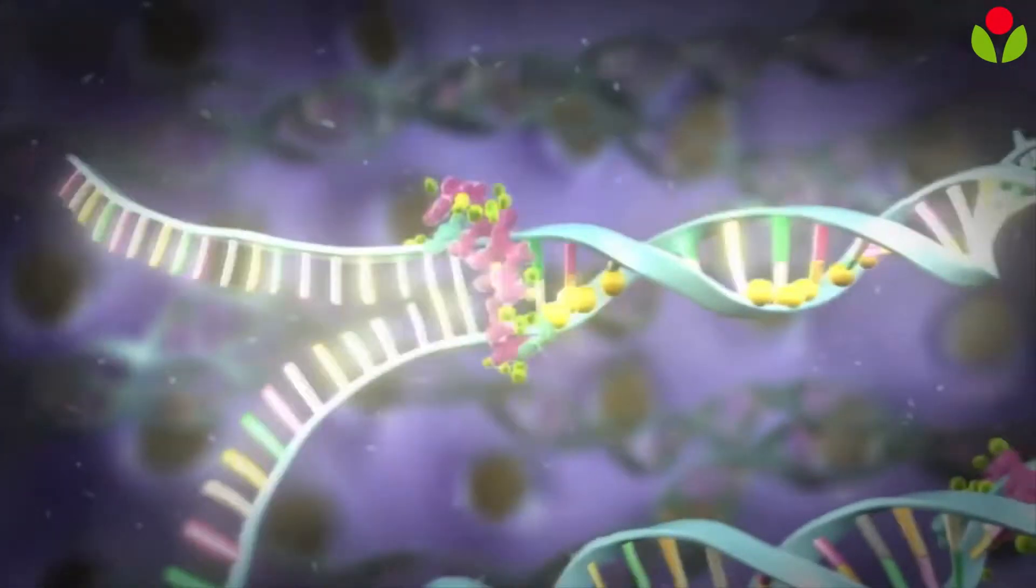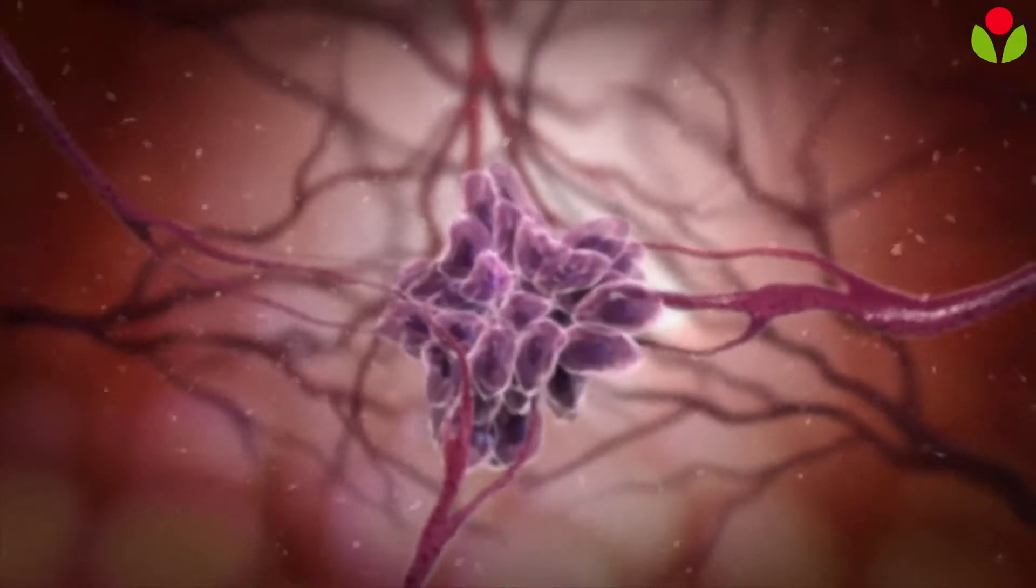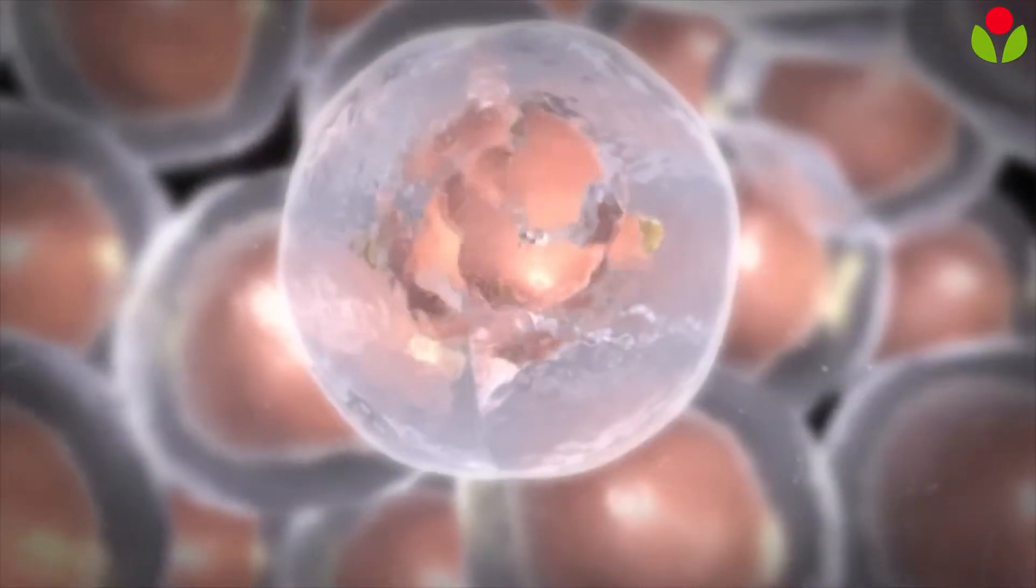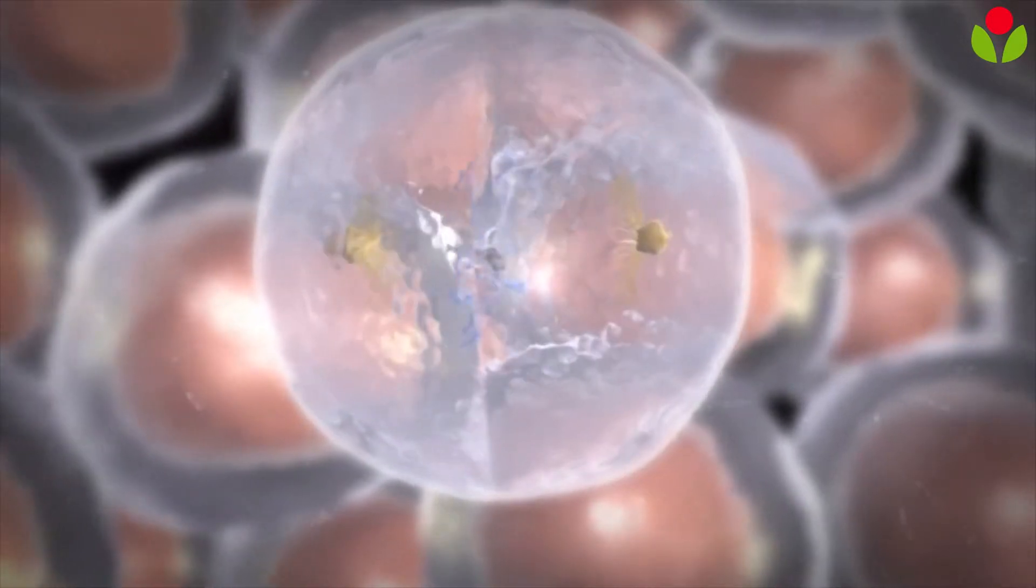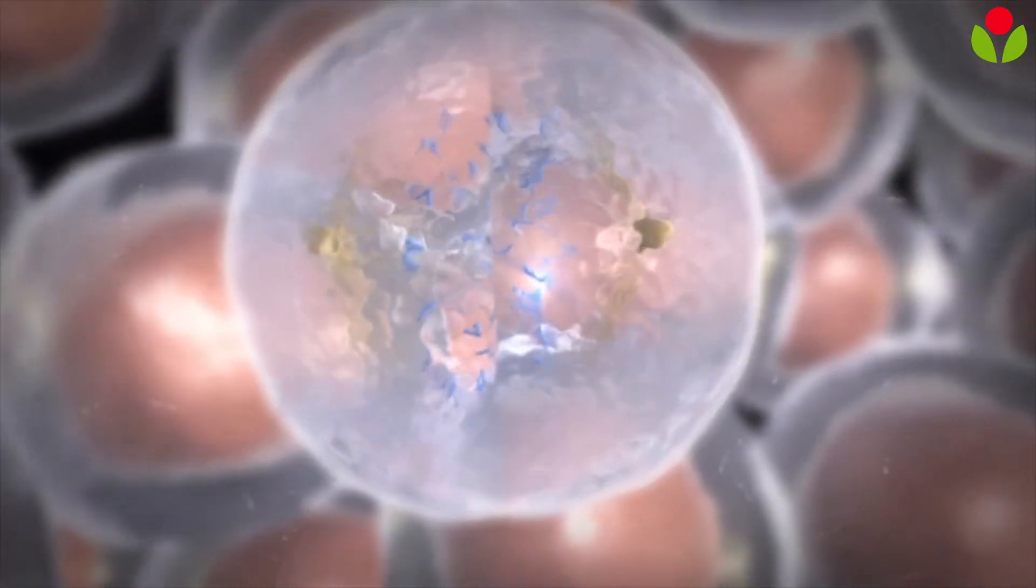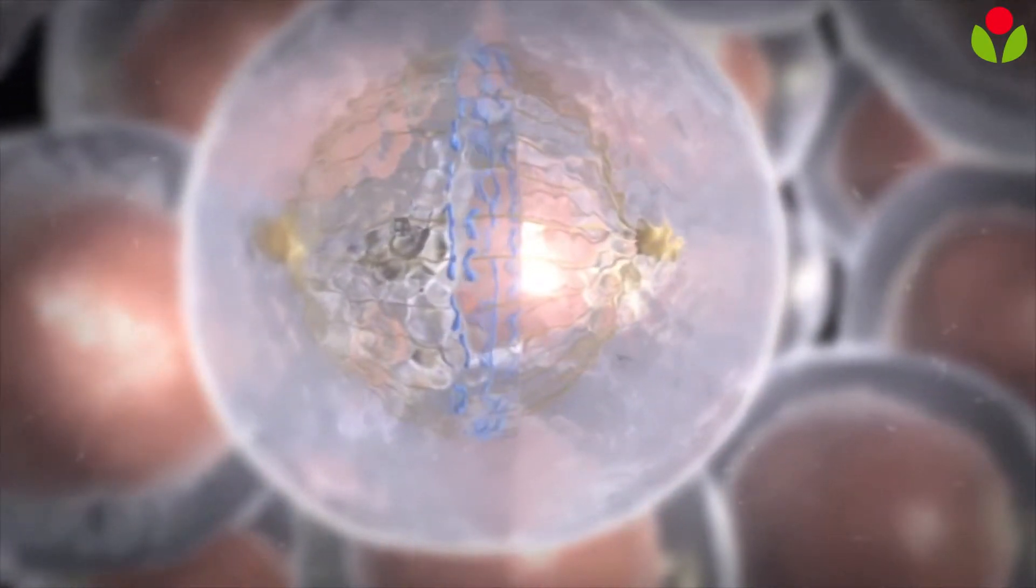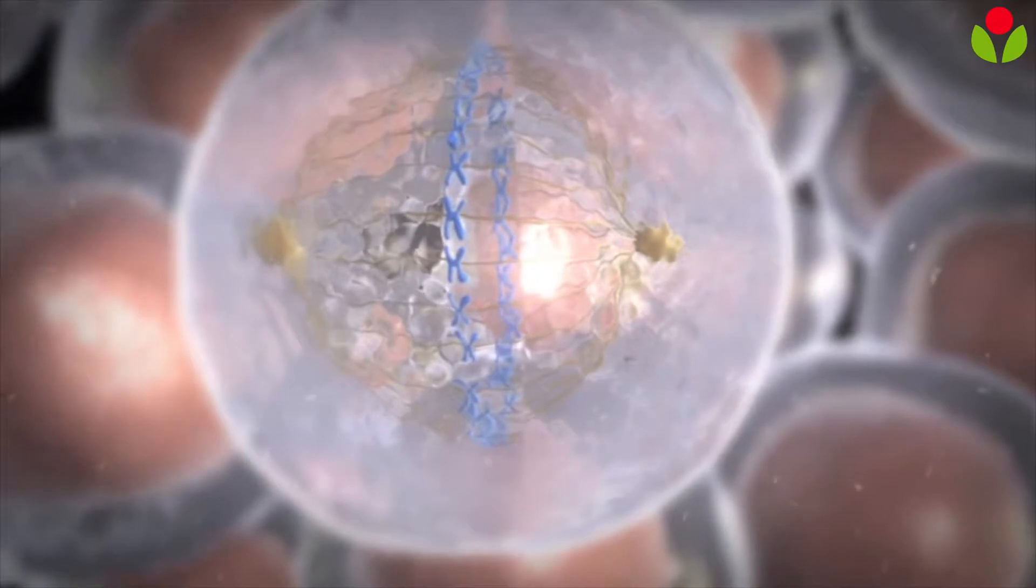When a normal cell divides, it goes through a series of steps including a duplication of its DNA, which contains the genetic instructions used in the development and functioning of living organisms.